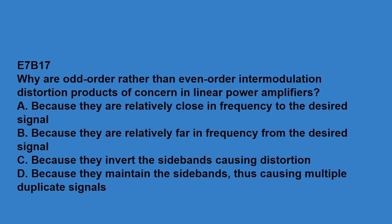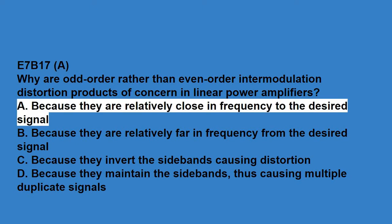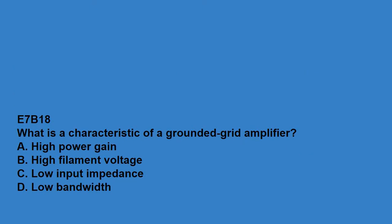E7B17, why are odd order rather than even order intermodulation distortion products of concern in linear power amplifiers? Because they are relatively close in frequency to the desired signal. E7B18, what is a characteristic of a grounded grid amplifier? Low input impedance.